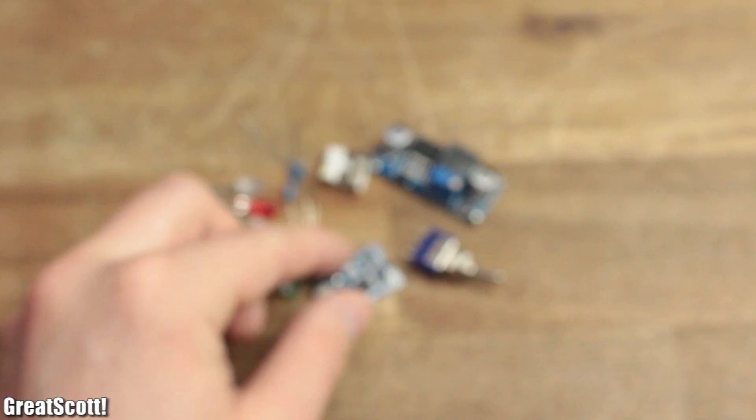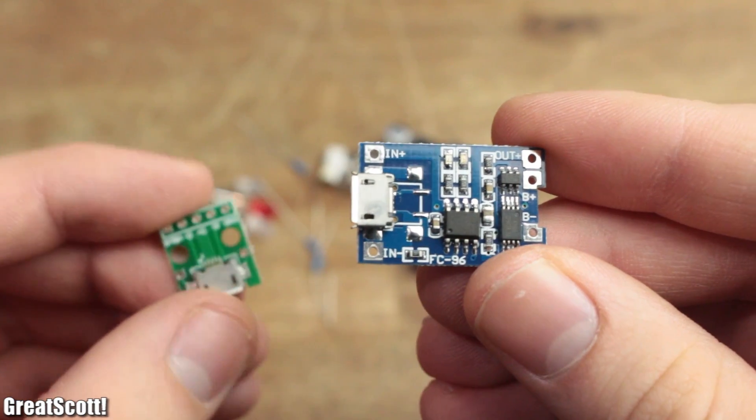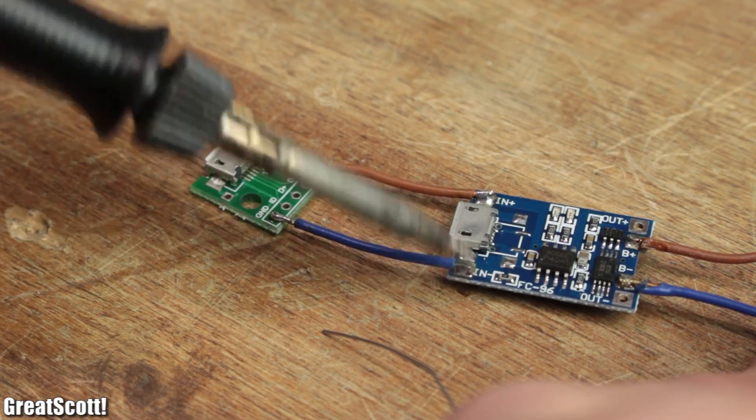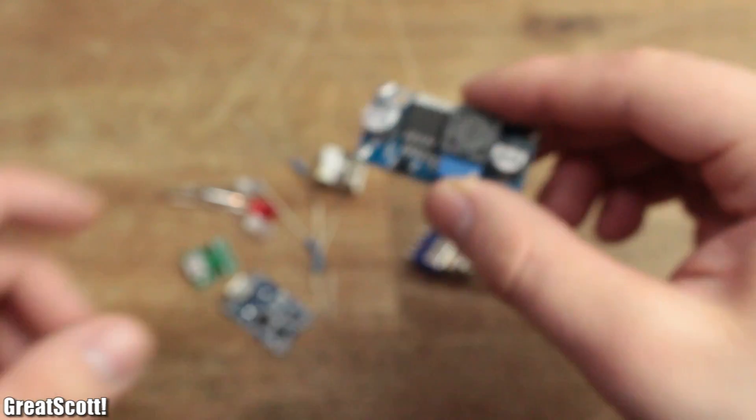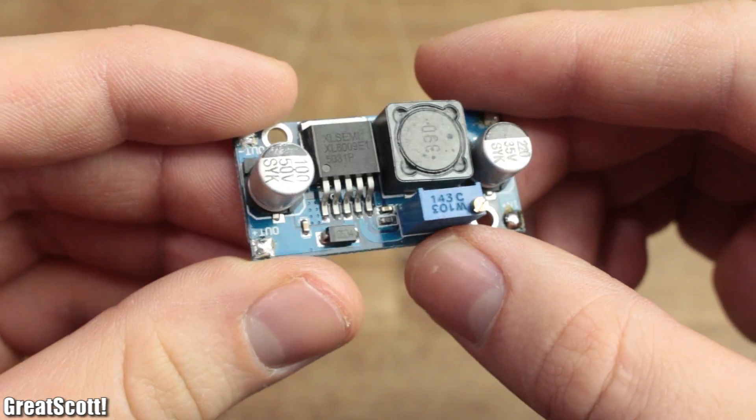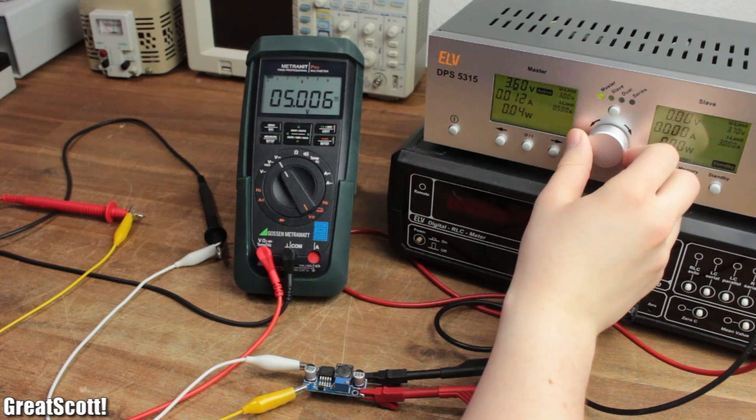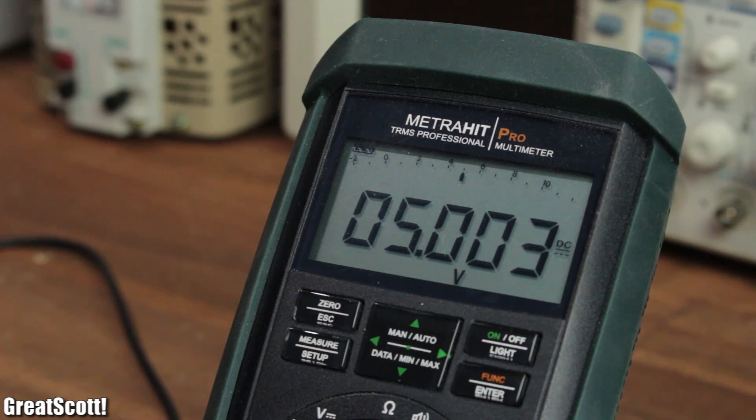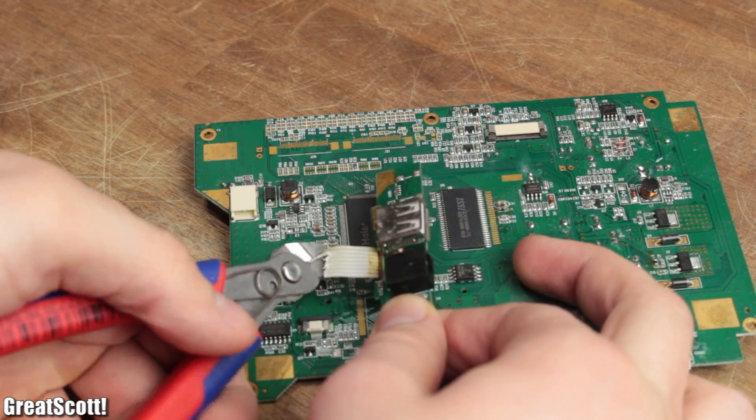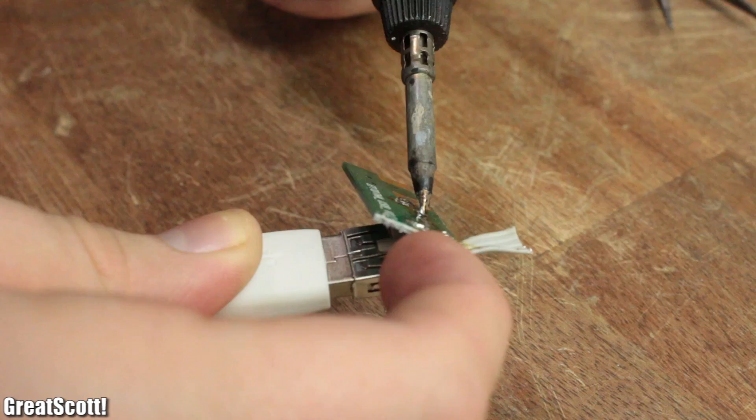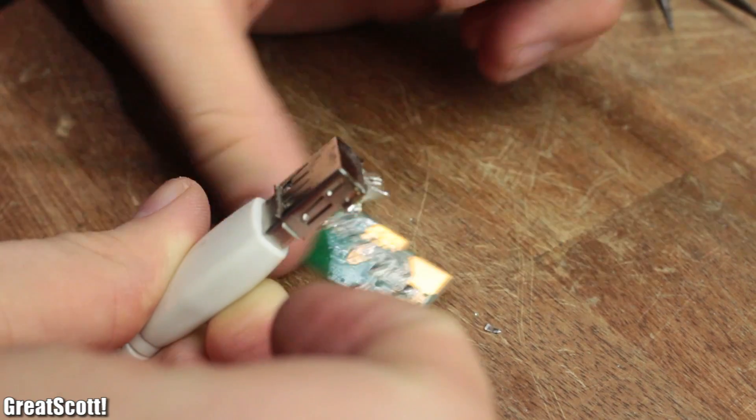The TP4056 in combination with a micro USB breakout will act as a charging and protection circuit for the batteries. In addition to that, the XL6009 boost converter will step up the 3 to 4.2 volts of the batteries up to 5 volts, which is the standard voltage for a USB port. This one I salvaged from an old PCB I had laying around, and it shouldn't be a problem for you to find one. They are everywhere.